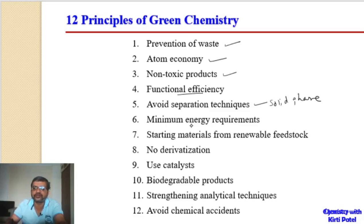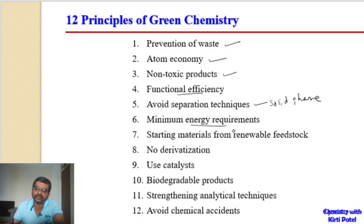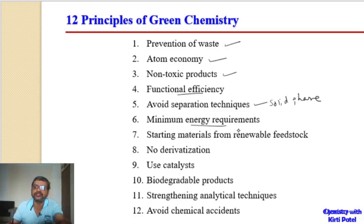The sixth principle talks about minimum energy requirements. The less energy required, the less energy is spent, the lower the temperature needed, and the more economically viable the process becomes. Because high energy use means higher costs.